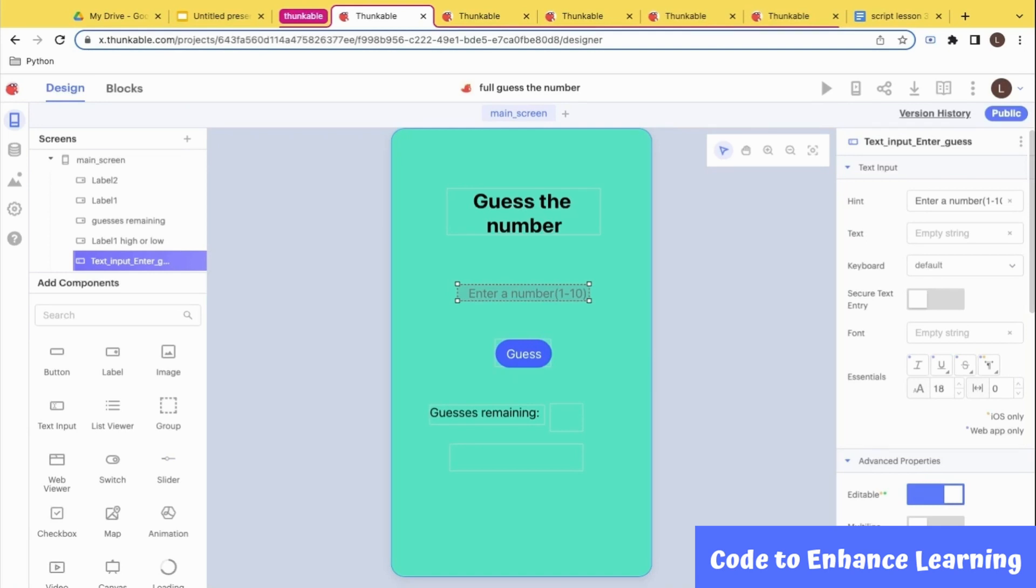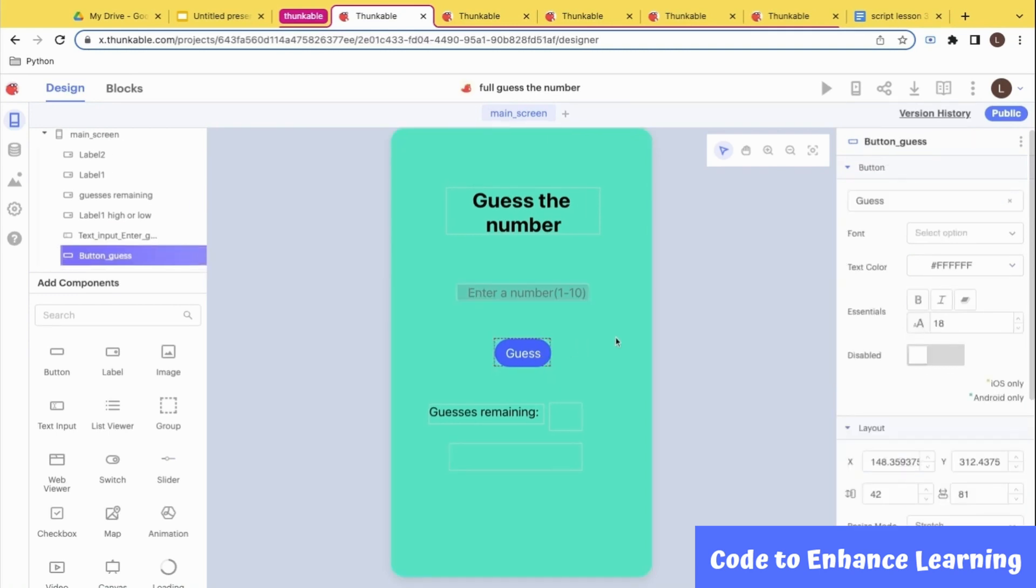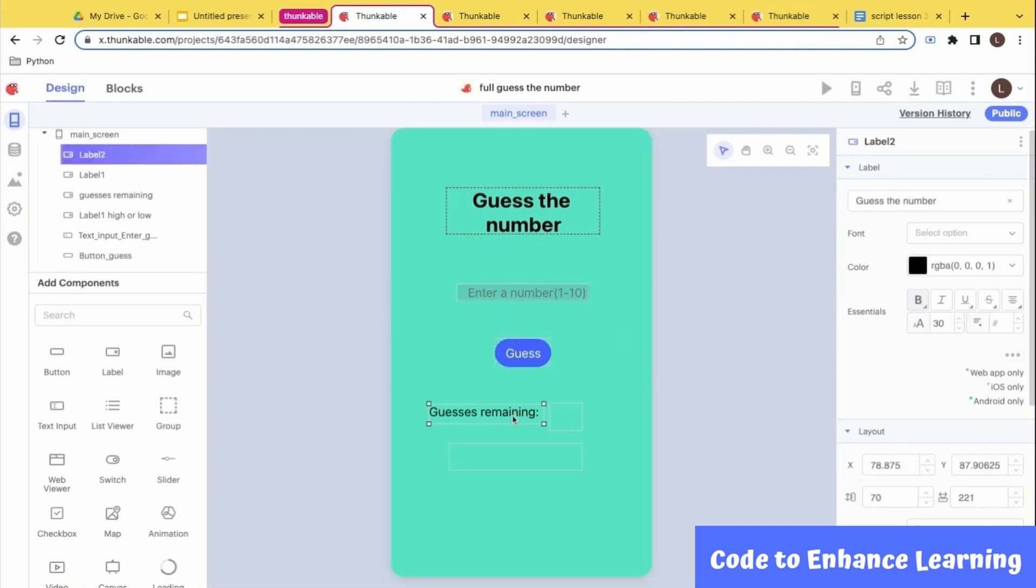I have designed the app like this in Thunkable. The text input allows users to type in anything they want such as words, passwords or numbers. Here are the properties of the text input. We can add a hint here. The hint added is to guess the numbers between 1 to 10. I have also added a button named Guess. I have also added three labels: one for the title, one for the guesses, and one to say if the number is higher or lower.